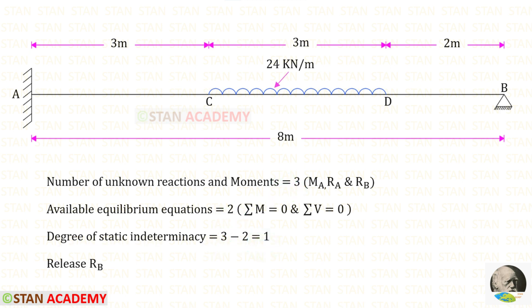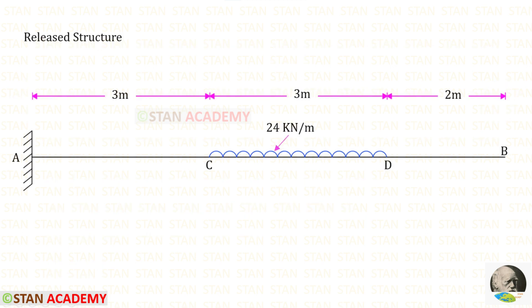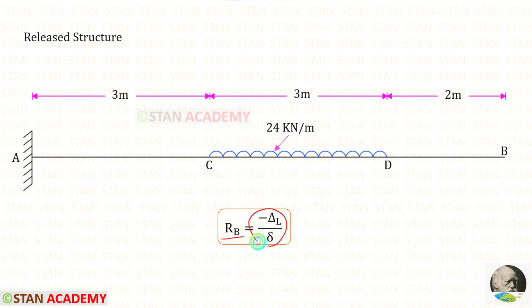To make this beam statically determinate, from point B let us remove Rb. You can see that from point B I have removed Rb. So point B becomes a free end. We know the formula to find the reaction Rb: minus delta_L upon delta.